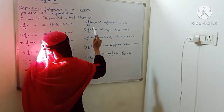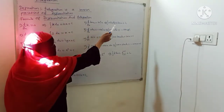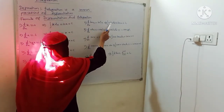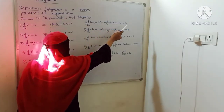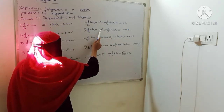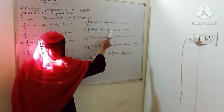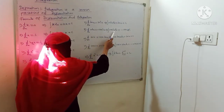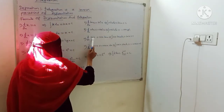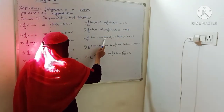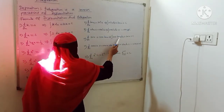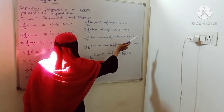d/dx of tan x is sec squared x. Integration of sec squared x dx is tan x plus C. d/dx of cot x is minus cosec squared x. Integration of cosec squared x dx is minus cot x plus C. d/dx of sec x times tan x — integration of sec squared x is tan x plus C.